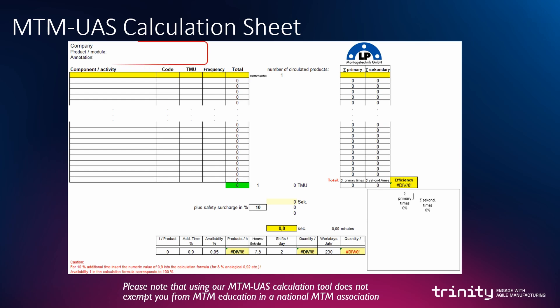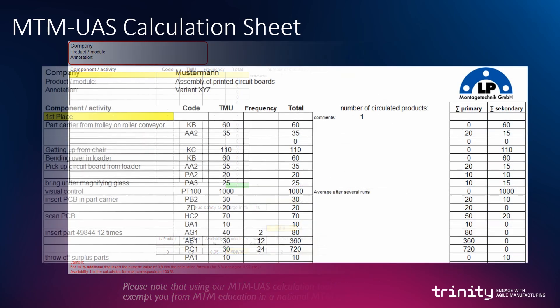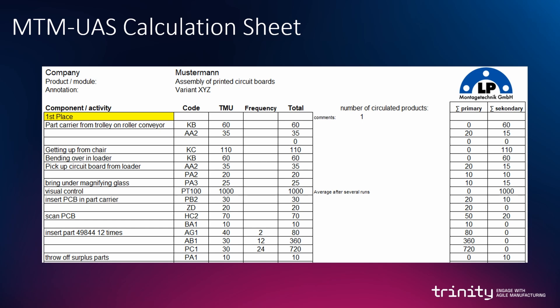In the headline, fill in the company name, the task, respectively the analyzed product or variant of the product, and if necessary, annotation of quantity or batch sizes, etc. The left column describes the components and the task steps. In the next column, enter the MTM UAS code, and the next column on the right side displays automatically the TMU value. In the next column, enter the frequency if it's more than one, and the last column shows the total amount of this row.